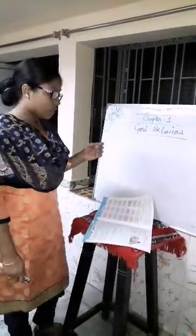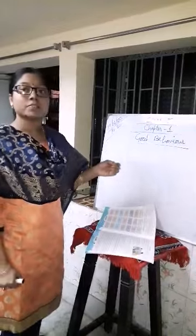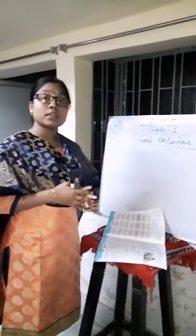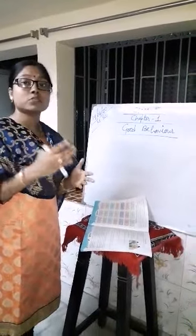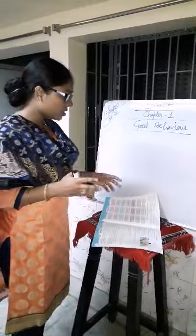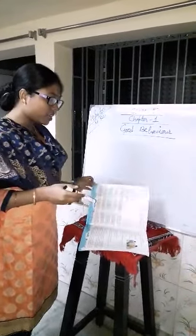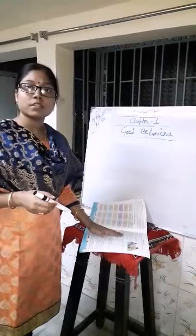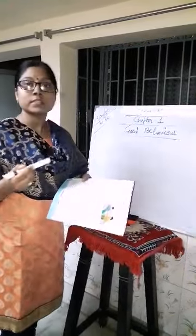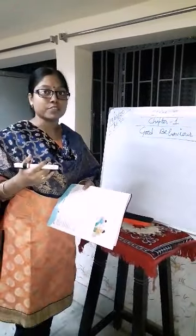Good evening students. Let us continue the chapter. Now we have started that chapter — good behavior, the first chapter. Some questions I have given you: what is good behavior? Write down some examples of positive behavior. This is all we have discussed. Now, related with that, one story is given in your book. Let us read the story and with all the sentences we will come to know what is good behavior and what is bad behavior.